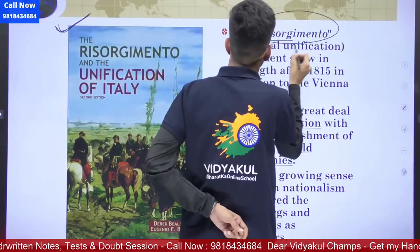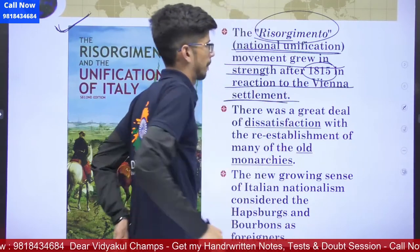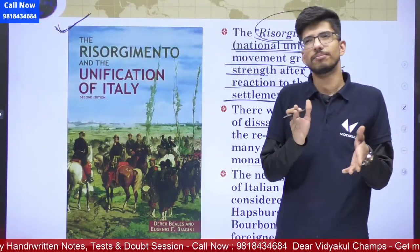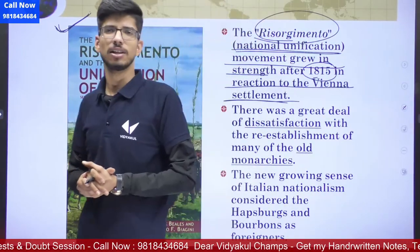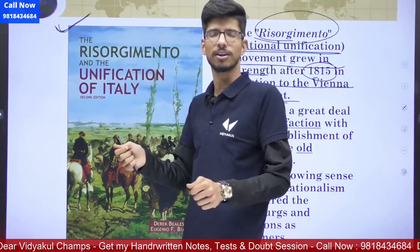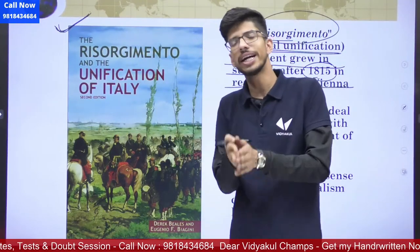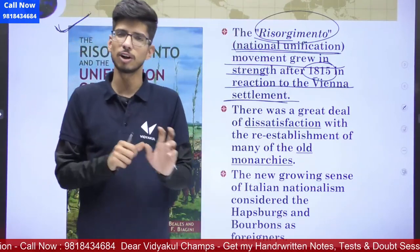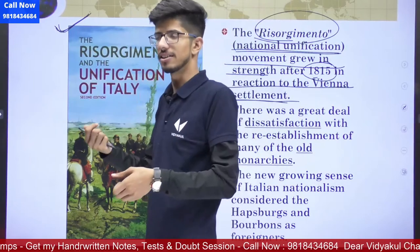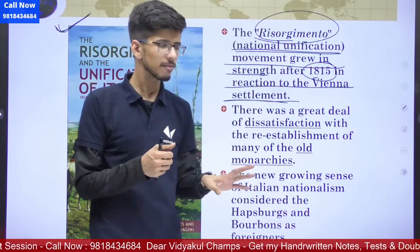The Risorgimento — the national unification movement — grew in strength after 1815 in reaction to the Vienna settlement. Just as in India, nationalism grew gradually over time. For example, after 1905 we could unite people under one principle, one figure, one thought. After that we designed our own tricolor — with modifications over time — and after independence on 22nd July 1947 adopted it formally. Bharat Mata was personified as a female deity. Similarly, nationalistic devices and symbols were invented and innovated so that nationalism could grow fast. The same thing happened in Italy after 1815.